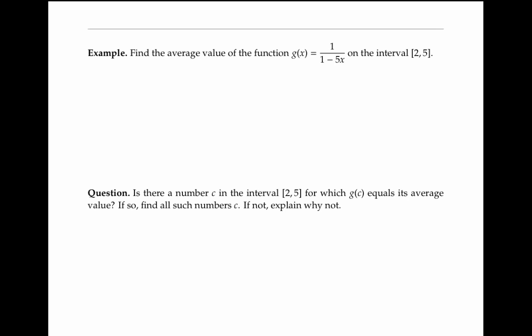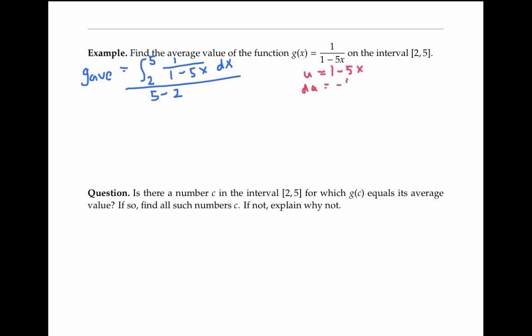Now let's work an example for the function g(x) equals one over one minus five x on the interval from two to five. The average value of g is given by the integral from two to five of one over one minus five x dx, divided by the length of that interval. I'm going to use u-substitution to integrate, setting u equal to one minus five x, so du equals negative five dx — in other words, dx equals negative one fifth times du.